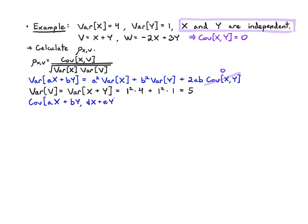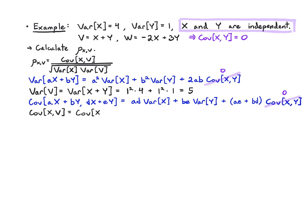For Cov(x, v), we use the covariance of linear functions formula: ad Var(x) + be Var(y), dropping the cross-term since Cov(x,y) = 0. Here x is a simple function of x with b = 0, so Cov(x, v) = 1×1×4 + 0×1×1 = 4. Therefore rho(x, v) = 4 / sqrt(4 × 5) = 2 / sqrt(5) ≈ 0.894.